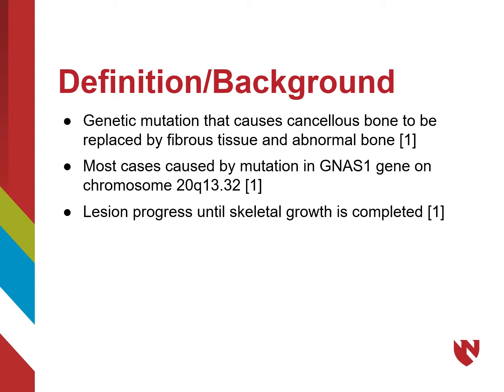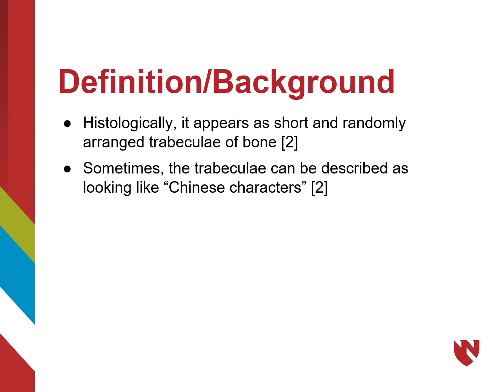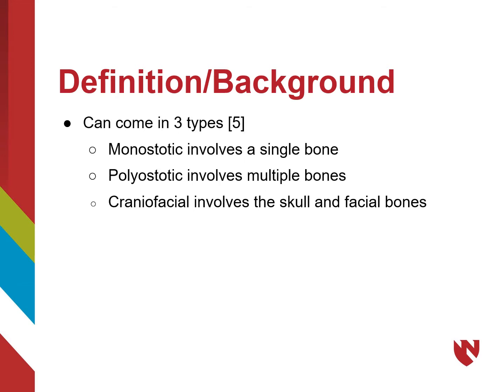Lesions tend to progress until skeletal bone growth is complete. Histologically, fibrous dysplasia appears as short and randomly arranged trabeculae of bone that is often described as looking like Chinese characters. Fibrous dysplasia can be broken down into three types.